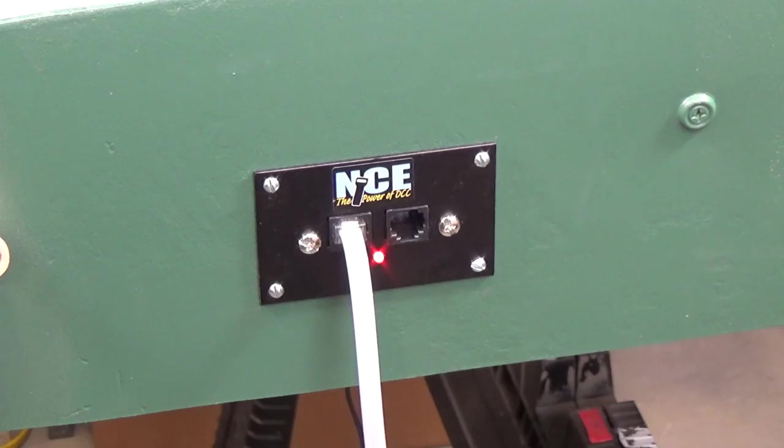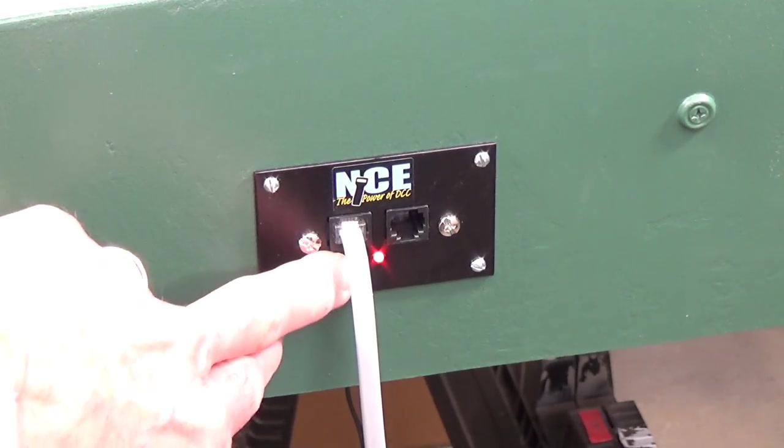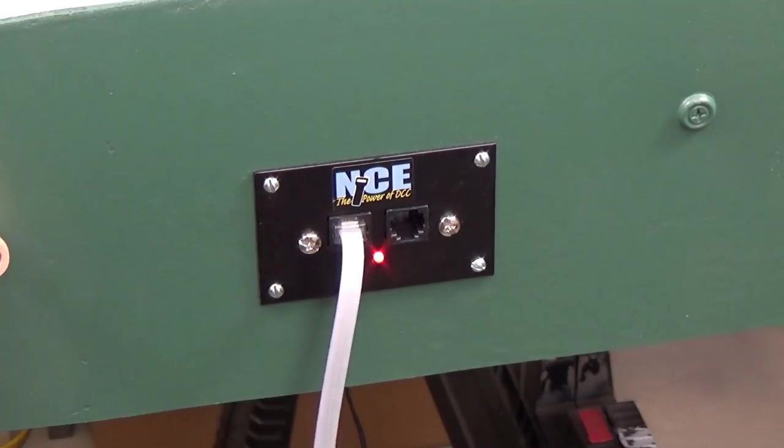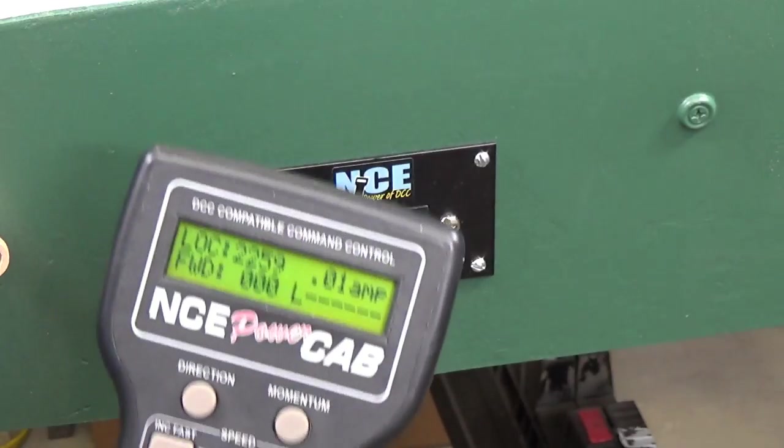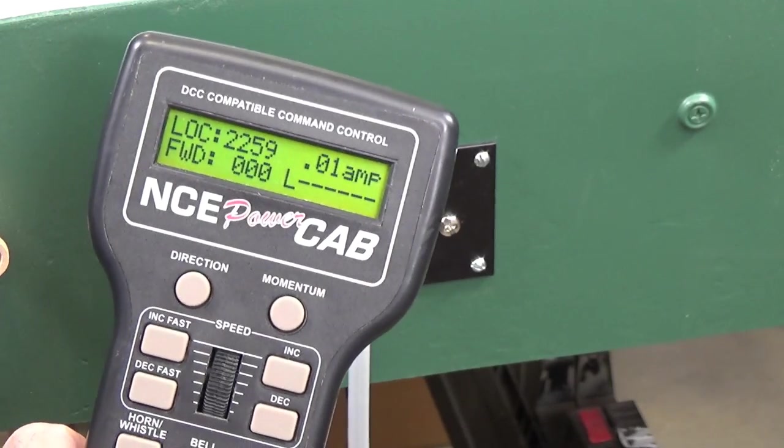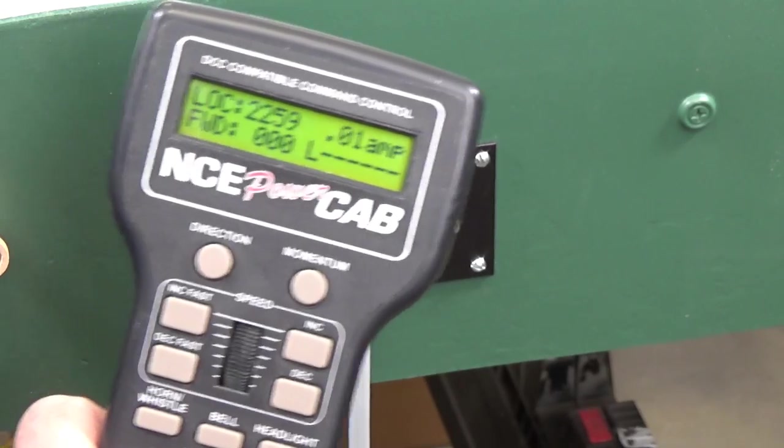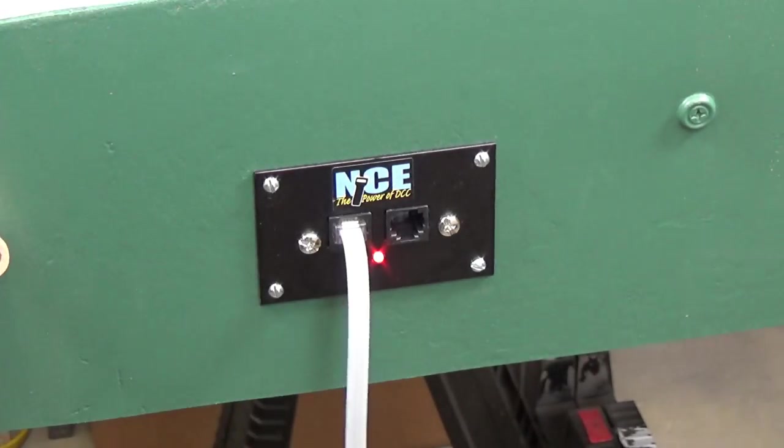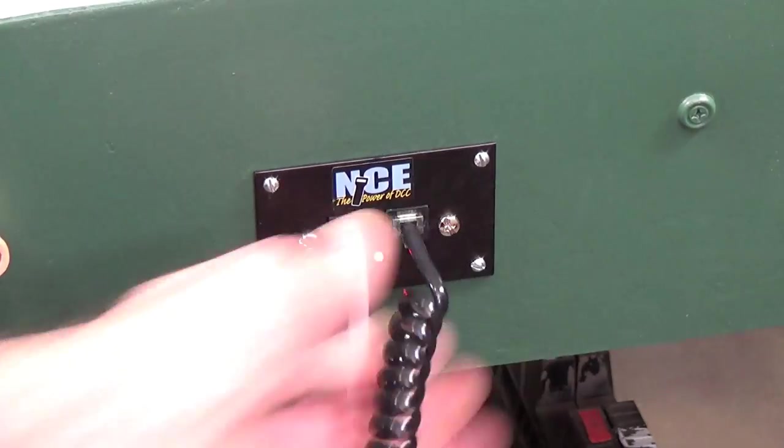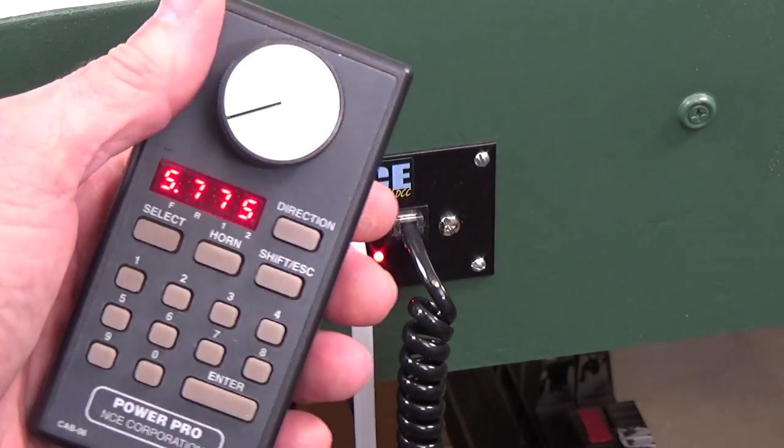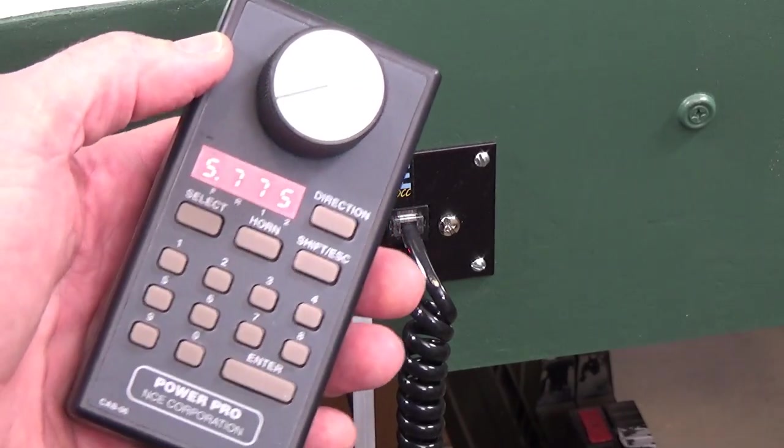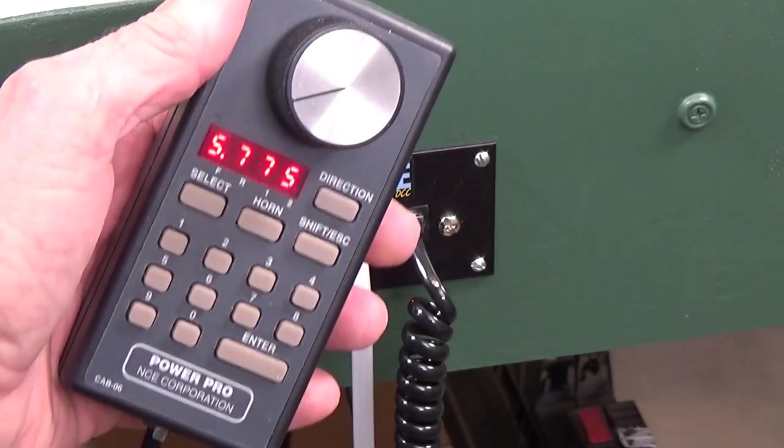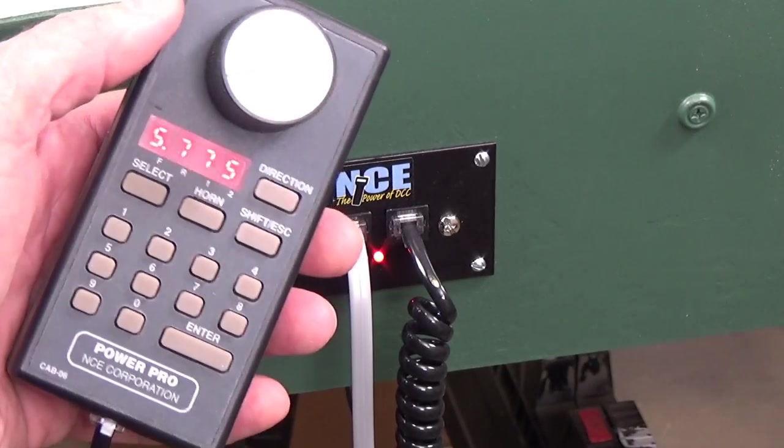Okay, here you can see I've got it all powered up. You can see by the light here on the front, move that out of the way, that we've got power. Also, the power cab tells you that we're controlling LOCO 2259 and right now we've got 0.01 amp current draw on the track because I do have a locomotive sitting up there. Okay, let me go ahead and plug in the other throttle. And I've got address, so locomotive 5775 selected here on this one, as you can see. If I can get the glare off of it. So let me go ahead and we'll go up to the track level and see if it works.